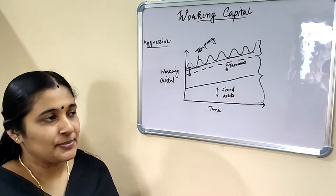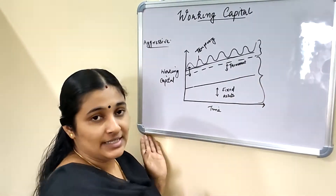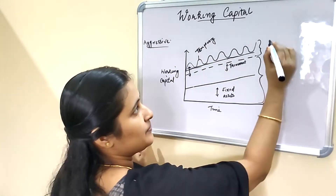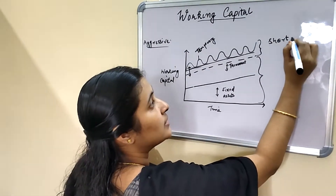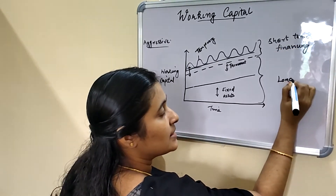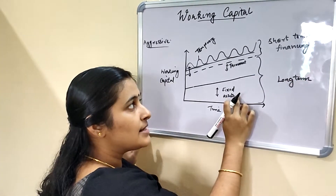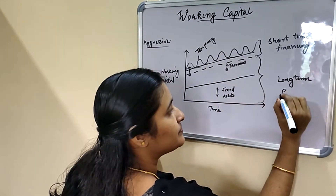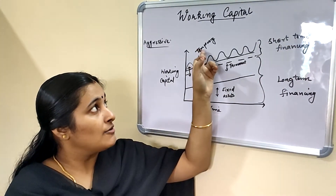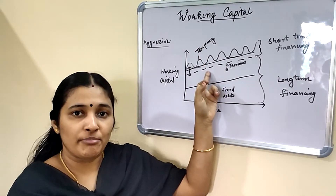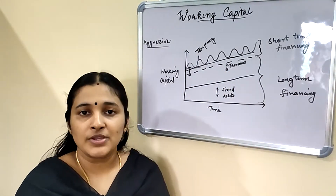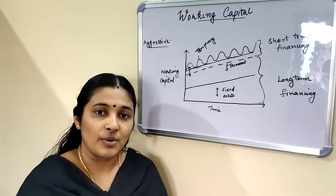The next approach is the aggressive approach. In the aggressive approach, short-term financing is used for temporary assets and a part of permanent assets. Long-term financing is used for meeting fixed assets and the balanced part of permanent assets. This is the aggressive approach of working capital financing.